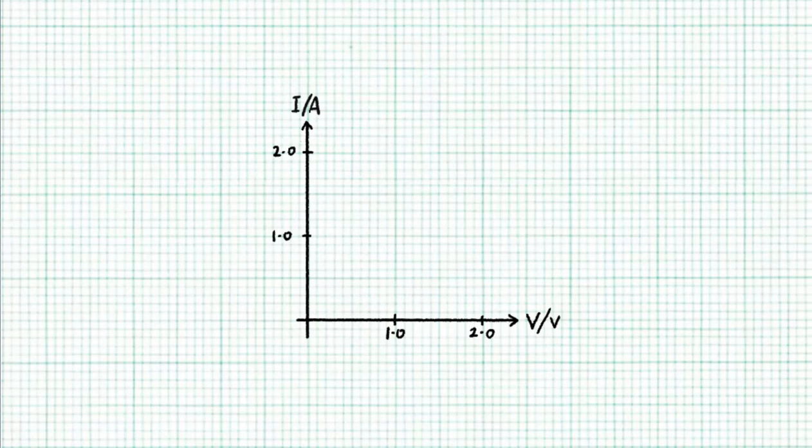Now an ohmic device would have an IV characteristic graph which are straight lines passing through the origin. So this one is corresponding to a resistance of 2 divided by 2, so 1 ohm. What about this line? This one will be 2 divided by 1, so 2 ohms.